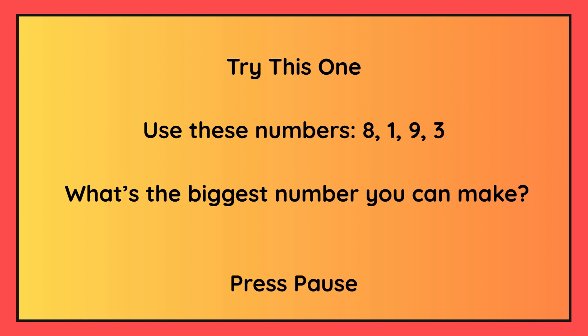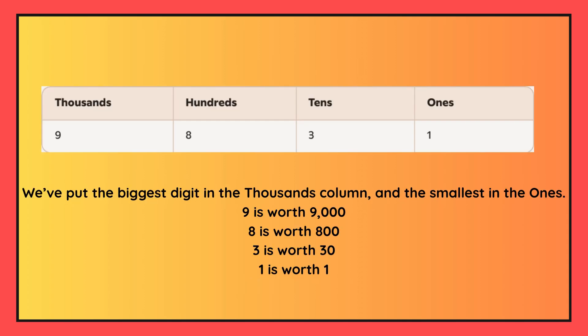Try this one. Use these numbers 8, 1, 9 and 3. What's the biggest number you can make? The answer is nine thousand eight hundred and thirty-one. You should have put nine in the thousands column because that is the largest number, followed by eight in the hundreds column, three in the tens column and one in the ones column.